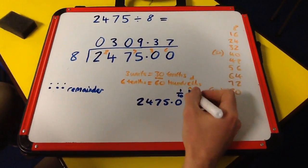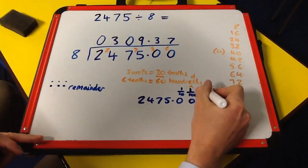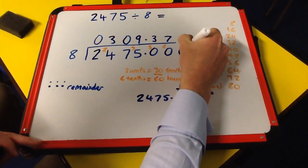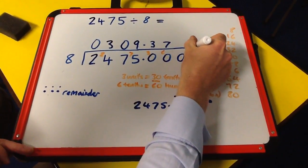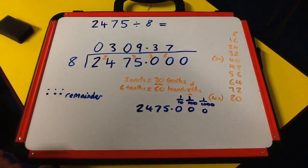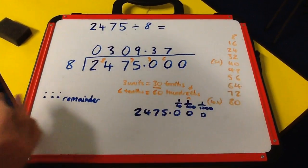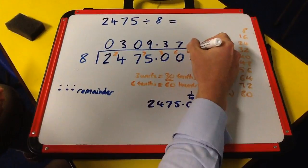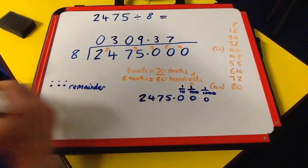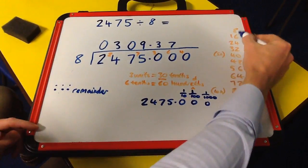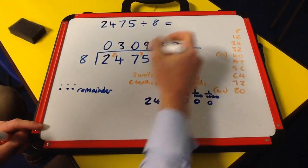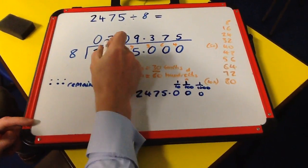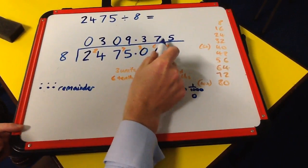Again, we extend to thousandths. Our remainder of 4 hundredths becomes 40 thousandths. 8 into 40 goes exactly 5 times. So our complete answer is 309.375.